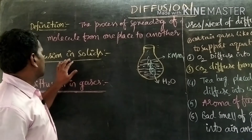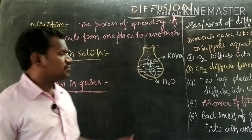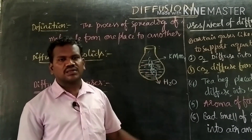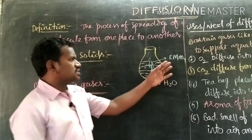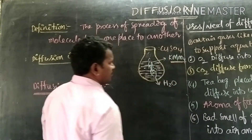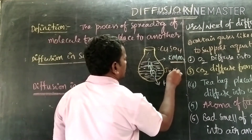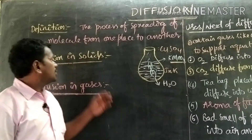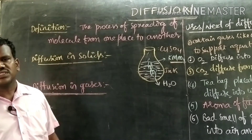We are going to study the properties of the process of diffusion in liquids with an activity. For that activity, we require a round bottom flask, water, and potassium permanganate. Instead of potassium permanganate KMnO4, we can use copper sulphate. If copper sulphate is not there, we can use simply ink also. Whatever it may be, we can use it to study the properties of diffusion.